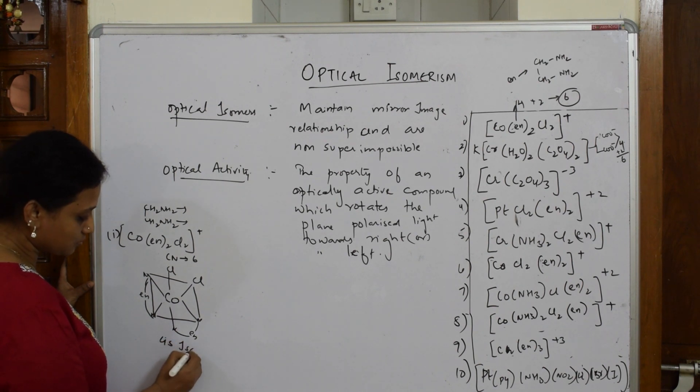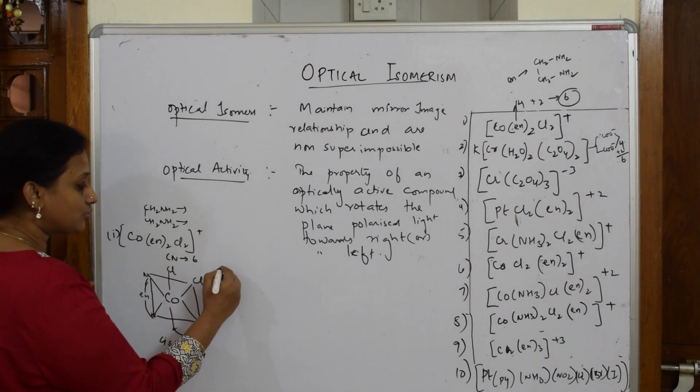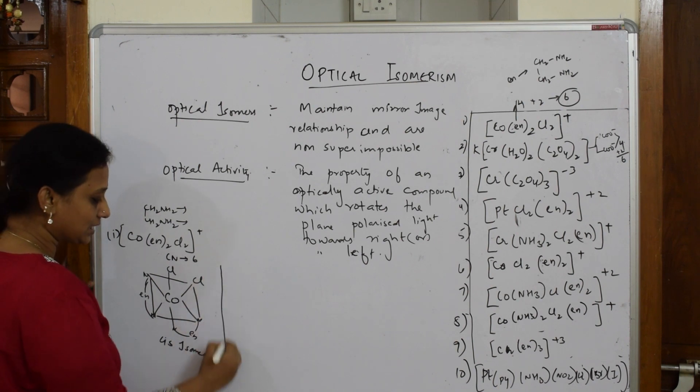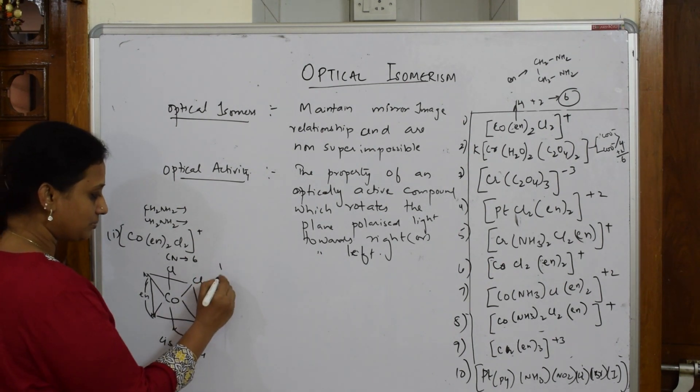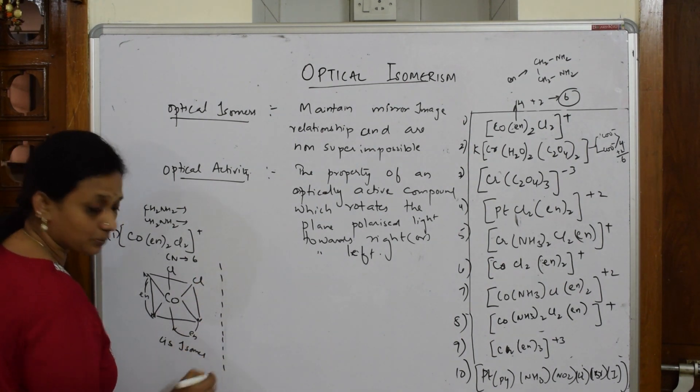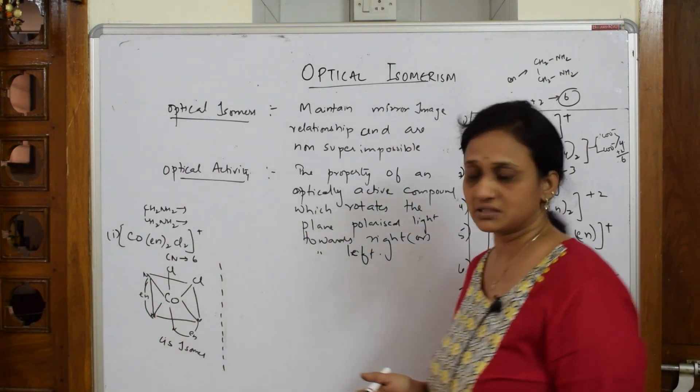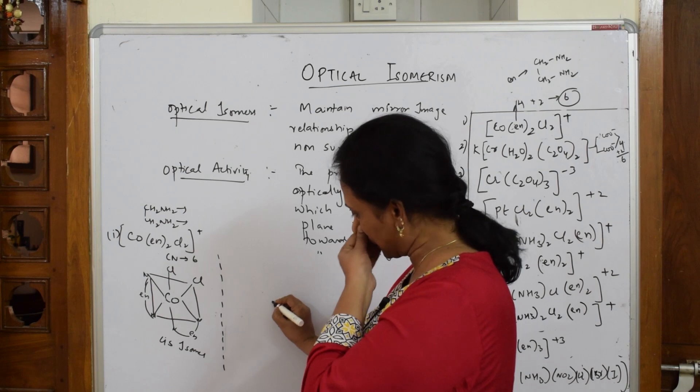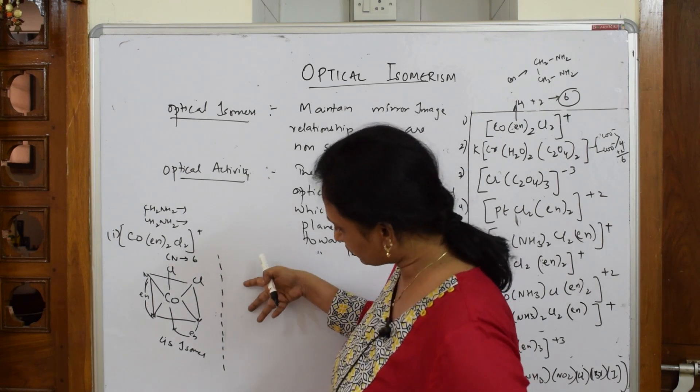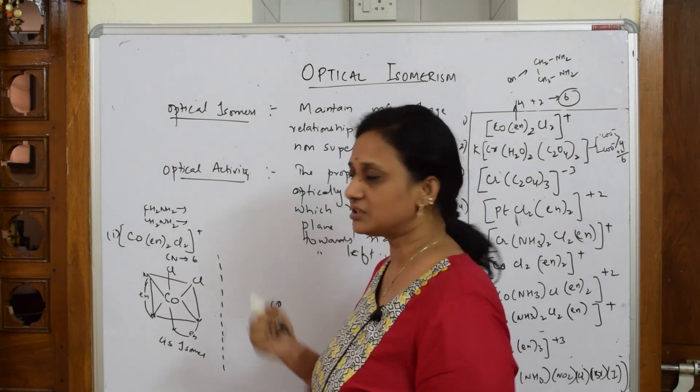Now I have to draw the mirror image. This is which isomer? This is a cis isomer because both are on the similar side. Now if I have to draw the mirror image, you can draw it like this, or if you don't have time you are writing the answer, you can make the mirror image like this also. So exactly the same - draw Co here, these two groups will be here because when you see your mirror, it's the exact image on the mirror, exactly the opposite.